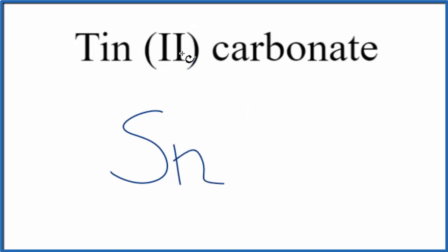Tin is Sn from the periodic table. This Roman numeral II tells us we have a transition metal and the charge is 2+. So that's very helpful.